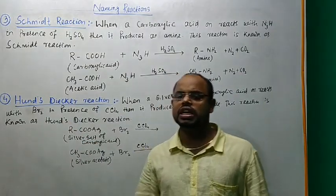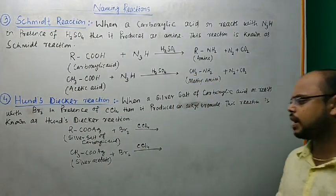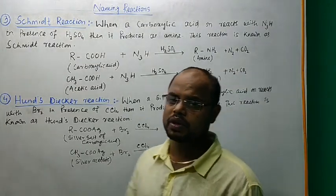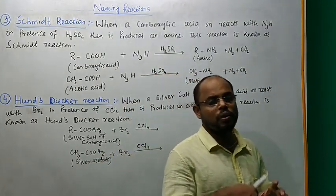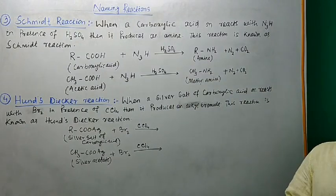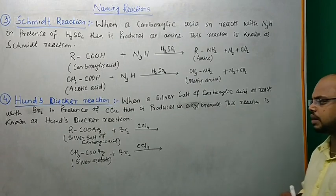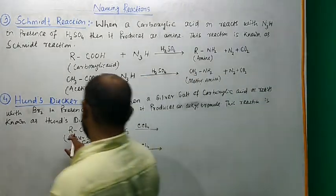Hunsdiecker reaction: when silver salt of carboxylic acid reacts with bromine in presence of carbon tetrachloride, then it produces an alkyl bromide.